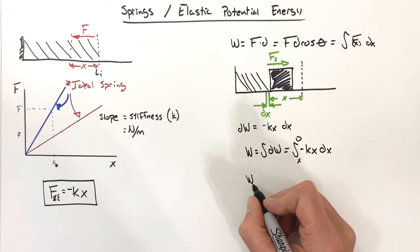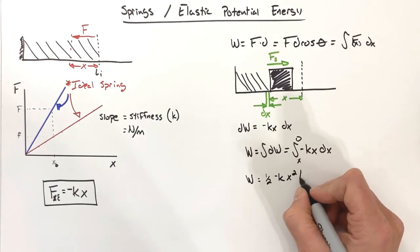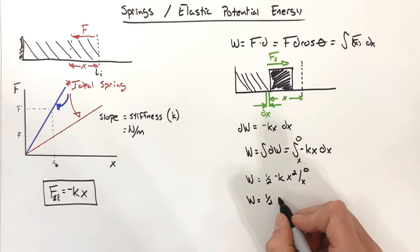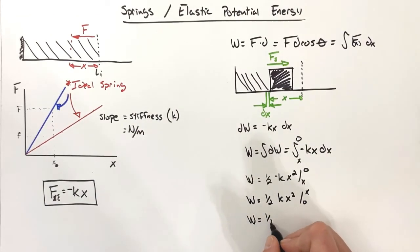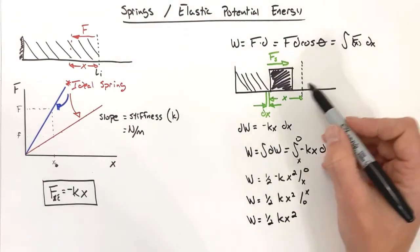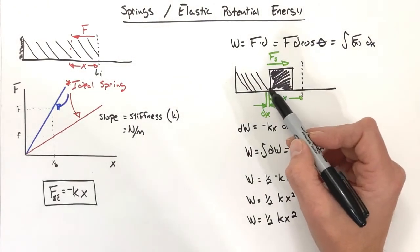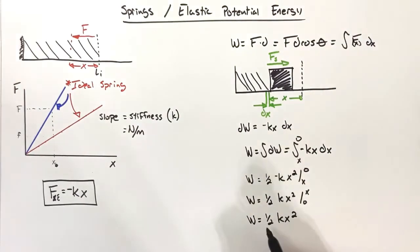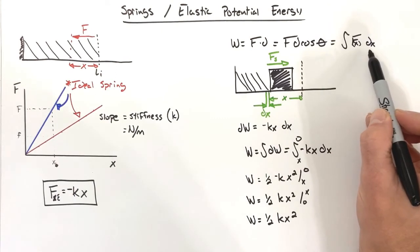Evaluating this integral from the initial compressed position to zero (equilibrium), we get: W = ½kx², where x is how far the spring was initially compressed. This is an extremely important result. This equation is the energy initially stored in the spring — the work the spring did in relaxing and pushing the block forward. We arrived at this by applying the calculus version of work and integrating F = −kx.